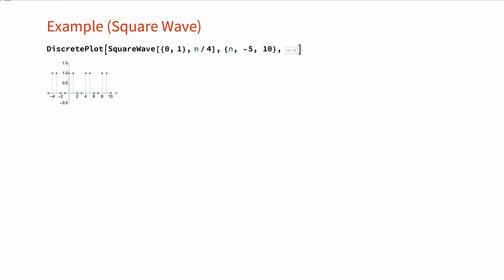For our first example, let's obtain the Fourier series coefficients of a discrete time periodic square wave of period N equal to 4, as shown here. In order to find the Fourier series coefficients, we substitute the period N and the values of x[n] into the Fourier series analysis formula and simplify to get the formula for the Fourier series coefficients.